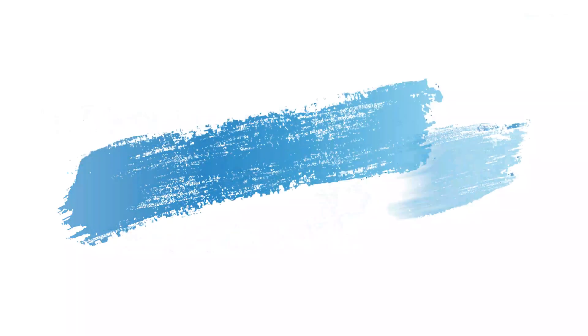The third way in which you can state the importance of the topic is to talk about a big problem that needs resolving. That's somewhat similar to the importance of the topic for society, but it's more framed in terms of a problem. You basically state a problem like unemployment and highlight how important solving this problem is. So that's the first big way of starting a paper — importance of the topic — and you can present it in three different ways.